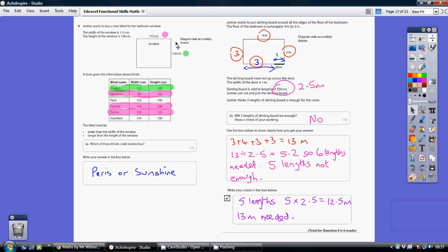I've then moved on to the height. The height must be greater than 126. Of my remaining three, I now cross off the Oregon because that height is less than 126. That leaves me with either Paris or Sunshine where the widths are greater than 115 and the heights are greater than 126.